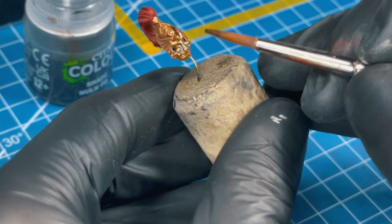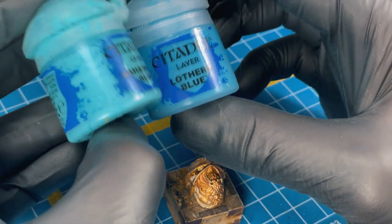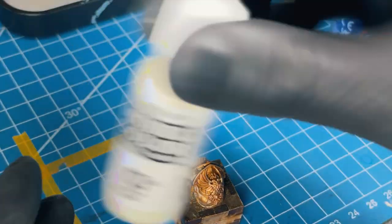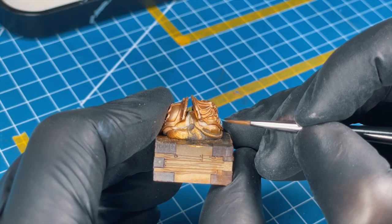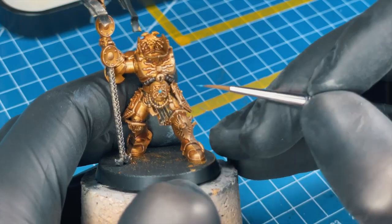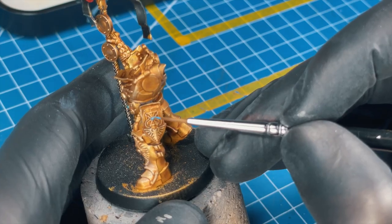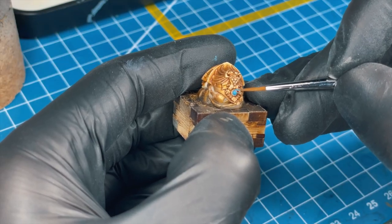Time to paint some gems. Grab your Lothern Blue, grab your Baharroth Blue—I was thinking about using Terradon Turquoise but later I just didn't—and also I picked some ivory from Vallejo. Using the Lothern Blue, we base coat all the gems around the armor.